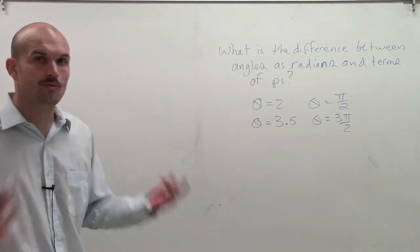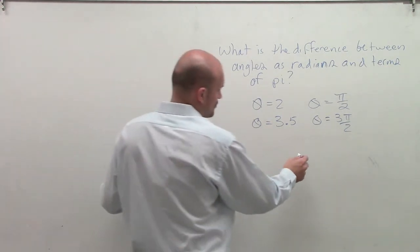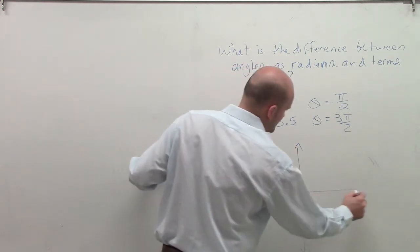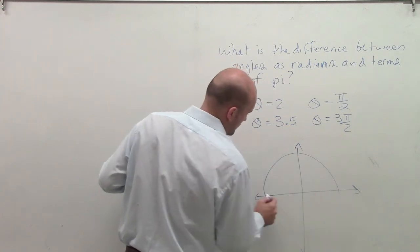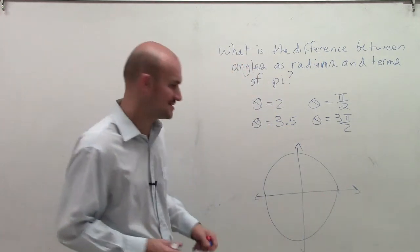So what I want to do is I want to go back through again and start with our definition of a radian. So remember, when we're creating a circle here, we have a nice lovely circle, which I have not created yet. So we have a nice lovely circle, kind of looking something like that.